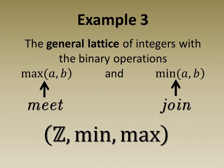For example 3 we have the general lattice of integers with the binary operations of max as meet and min as join.